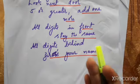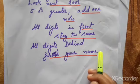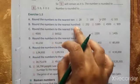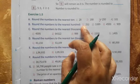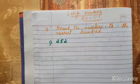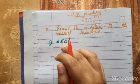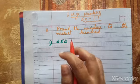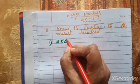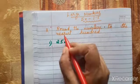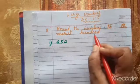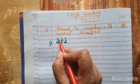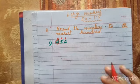Part B: round the number to the nearest hundred. First question: 252. We have to round 252 to the nearest 100. First step — check the place value. We are rounding to the nearest hundred, so find the hundreds place. In 252, the digit in the hundreds place is 2.